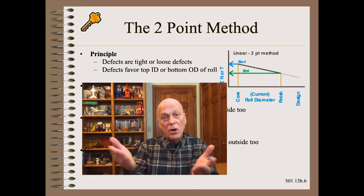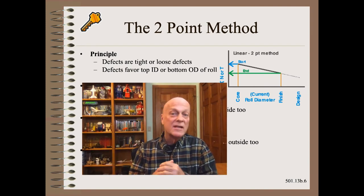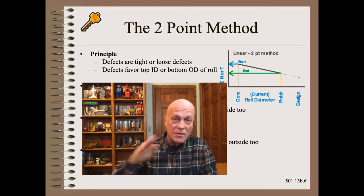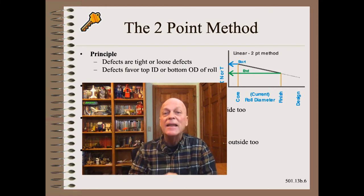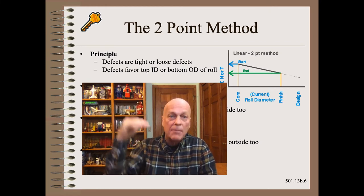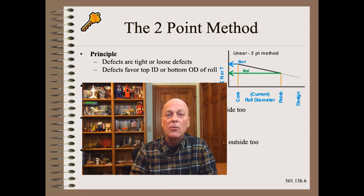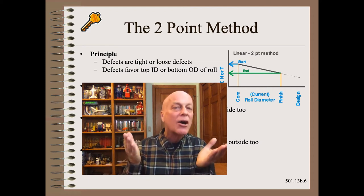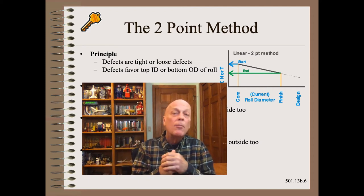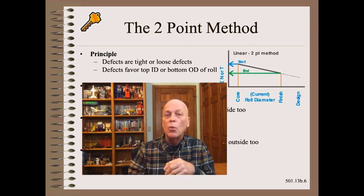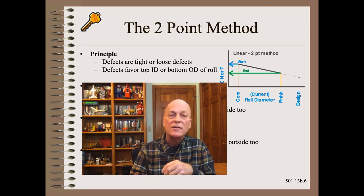Once you know whether your specific defect is a tight, loose, or taper defect, and then whether it favors the top or the bottom of the roll, you are in a great position to make a move on one or more of your winder curves.